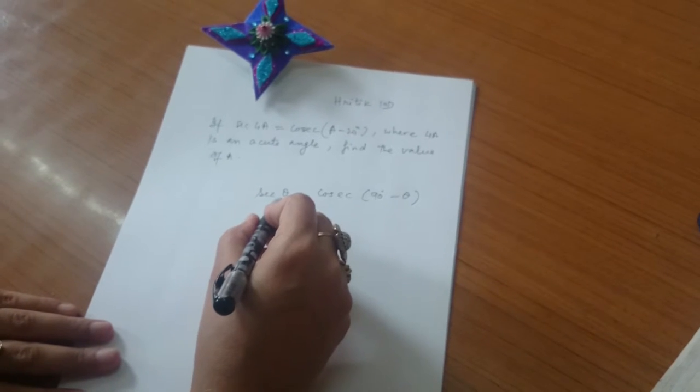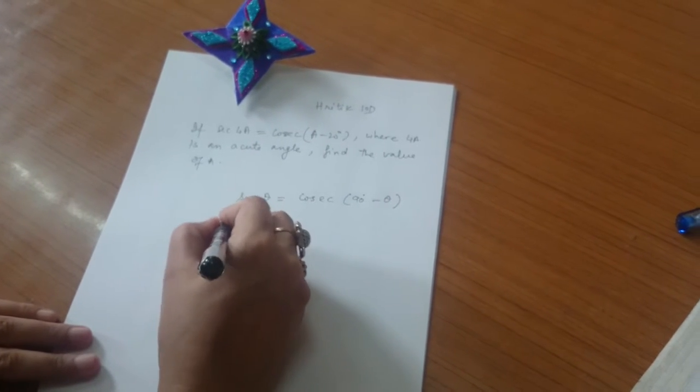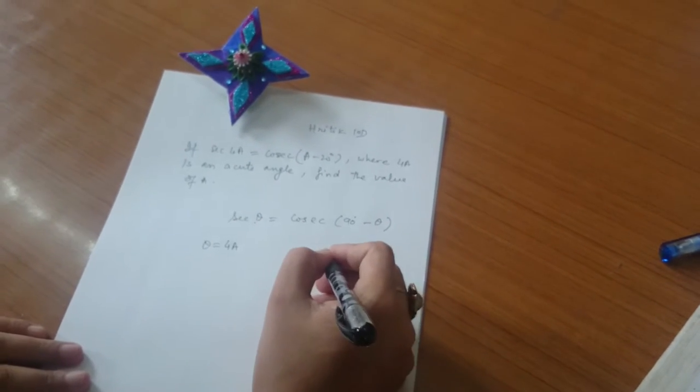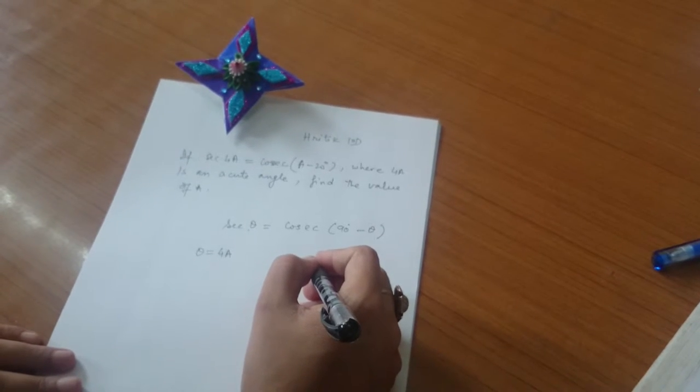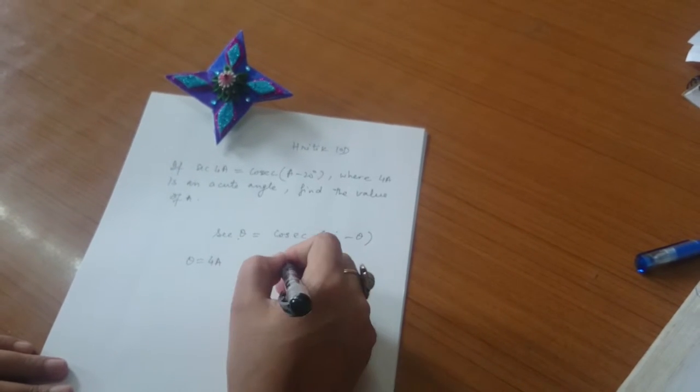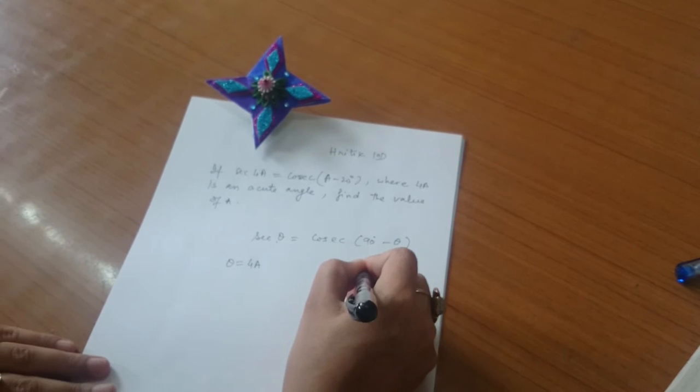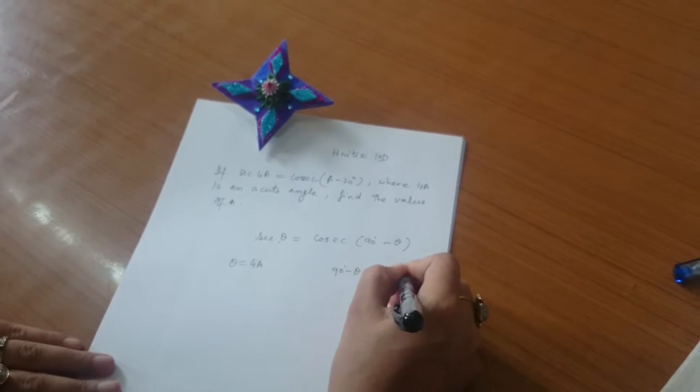If we compare these equations, theta equals 4a, and 90 minus theta equals a minus 20 degrees.